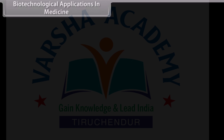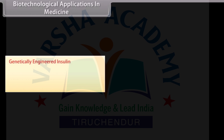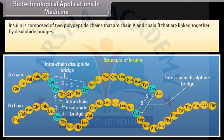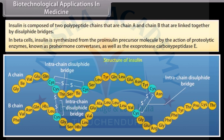Biotechnological applications in medicine. Genetically engineered insulin: Insulin is a hormone produced by the pancreas that regulates the level of glucose. Insulin is composed of two polypeptide chains, chain A and chain B, that are linked together by disulfide bridges. In beta cells, insulin is synthesized from the proinsulin precursor molecule by the action of proteolytic enzymes known as prohormone convertases.